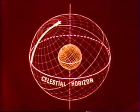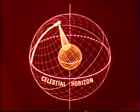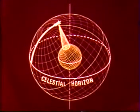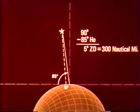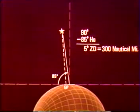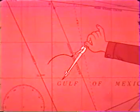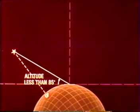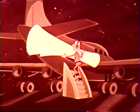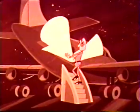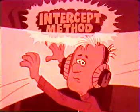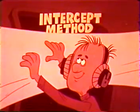When you note the altitude, you know you are somewhere on a circle of equal altitude around the GP of the observed body. The technique of actually plotting a line of position depends on the observed altitude of the celestial body. If it is 85 degrees or more, the zenith distance formula shows that you are within 300 nautical miles of the GP, and you can actually plot the circle of equal altitude on the navigator's chart. But if the altitude is less than 85 degrees, and it usually will be, you would need a chart too large to fit in your aircraft. So you must use a different technique. It is called the intercept method, and it will be discussed in part three of this series.